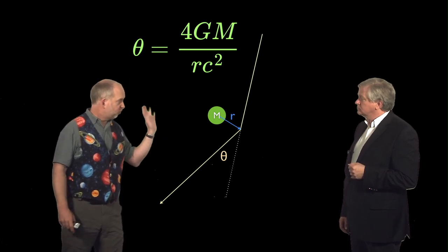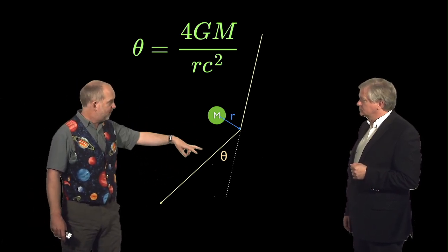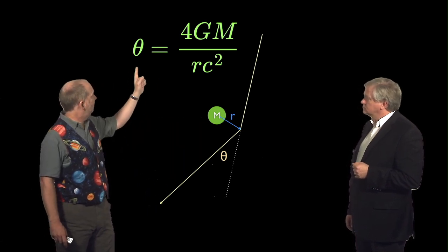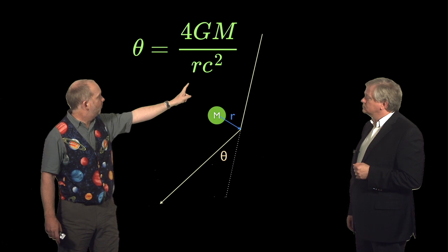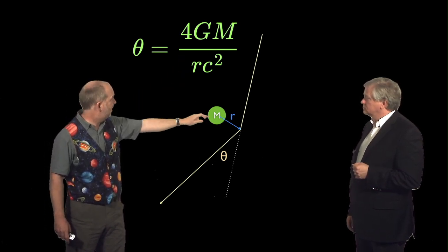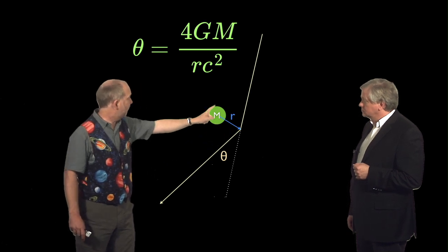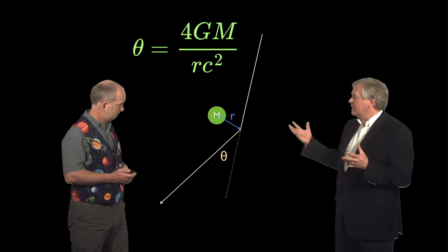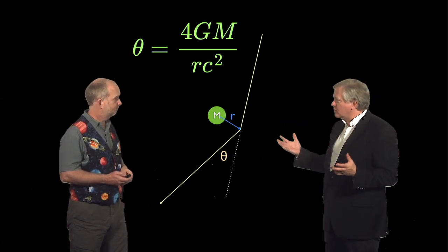Then, as an approximation valid when r is fairly big, it deflects the light by an angle in radians that's equal to 4GM over rc squared. So G is the gravitational constant, M is the mass of whatever this thing is here, r is how far the light passes from it, and c the speed of light all squared.